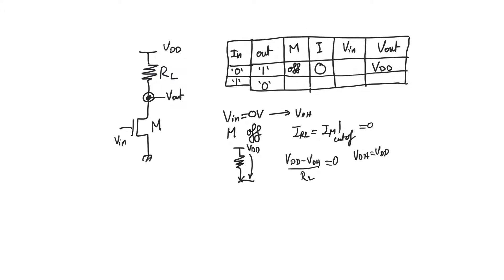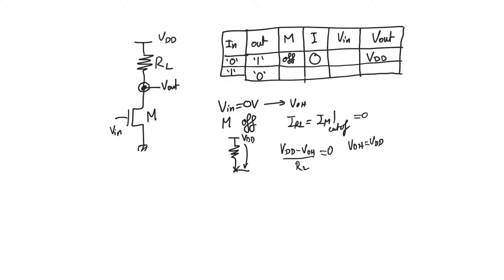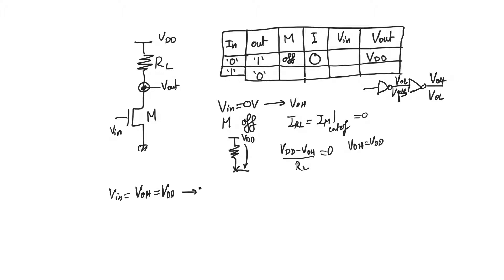To find V_output_low, we must think of our inverter as having its input provided by another inverter or gate from the same family. The inputs to our gate are the outputs of a similar gate. So when evaluating V_output_high, we should ideally use V_output_low as input, and when evaluating V_output_low, we should use V_output_high as input. Therefore, to find the output low, we use V_input equals V_output_high, which we have already found to be VDD. Again, we apply KCL at the output node: I_M equals I_RL.